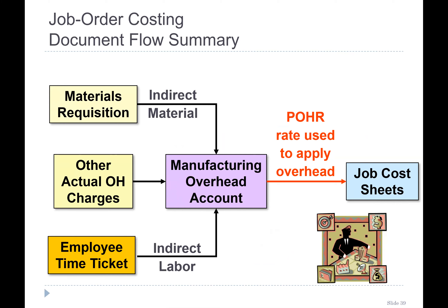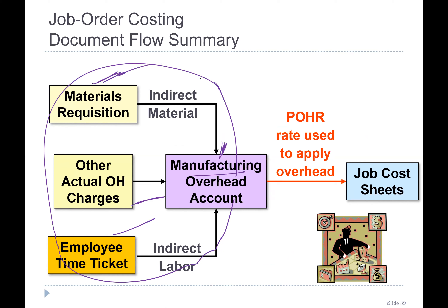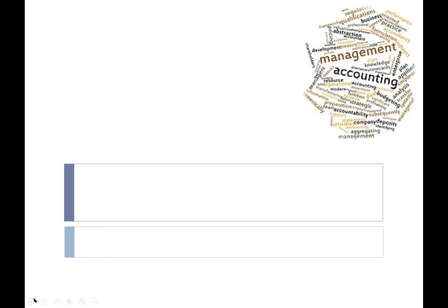When production is happening and we are recording data, that is our actual data. Actual material, actual indirect labor time tickets, and actual other charges — this data comes after production. But before that, when we accepted the order, we used POHR. We entered the job cost sheet using POHR to determine whether the order would be profitable. Then production starts and actual data replaces the estimation.